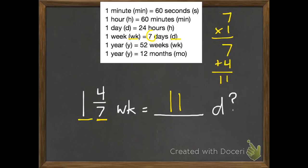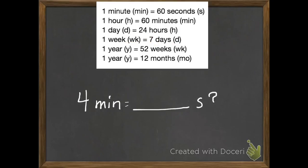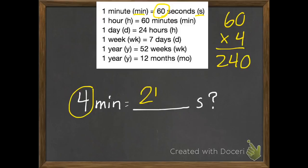Try these next three along with me. Go ahead and pause it if you need to, and then when you've got it done, unpause it to check to see if you got it right. So 4 minutes equals how many seconds? You should have used the first fact there at the top. 60 seconds equals 1 minute. We have 4. So 60 times 4 equals 240.